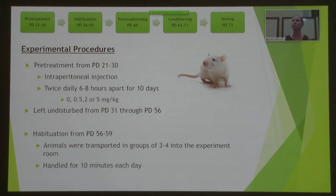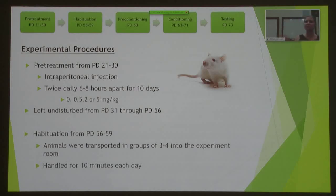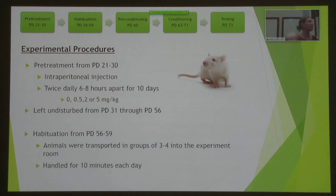Before starting conditioned place preference testing, we habituated the animals to the testing room because CPP can be a very sensitive paradigm. For that, we did four days of handling — simply taking them into the experimental room and handling them in groups of three to four for 10 minutes per day.